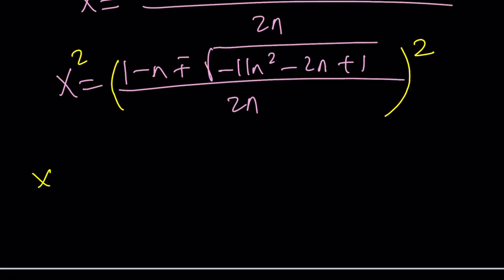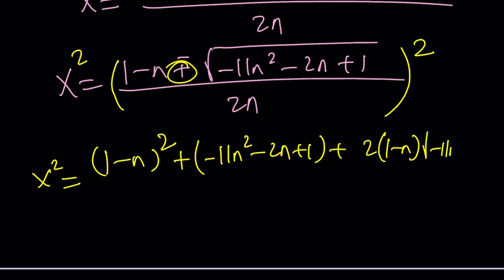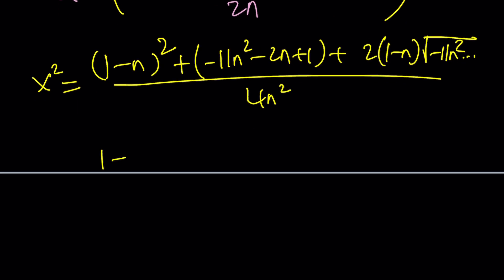When you square something like this, this will be squared. Let's just go with the plus sign. This will be squared, and then plus 2ab, the radical. You get the idea. And 2n will be squared. This is x squared. You need to simplify this, just doing the numerator.